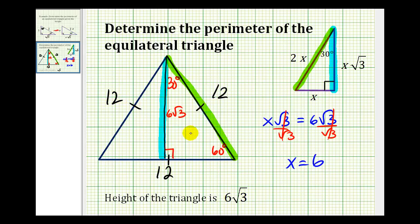So to determine the perimeter of this equilateral triangle, we just need to determine the sum of the length of the three sides. Well twelve plus twelve plus twelve, or three times twelve, would give us a perimeter of thirty-six units.